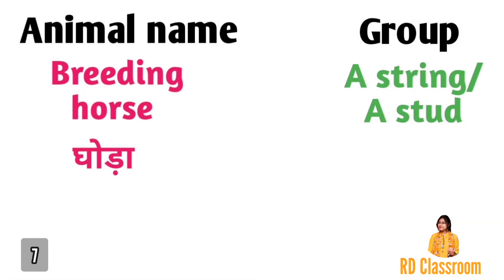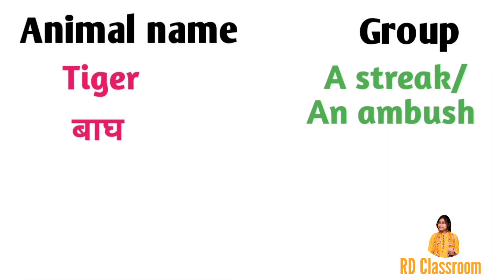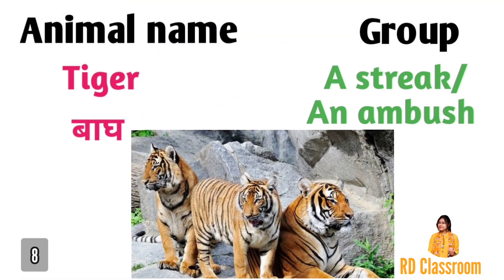Number seven is another type of horse, that is breeding horse, ya fir ghora, jiske group ko a string ya a stud kaha jata hai. Number eight is tiger, ya fir baag, jiske group ko a streak ya fir an ambush kaha jata hai.